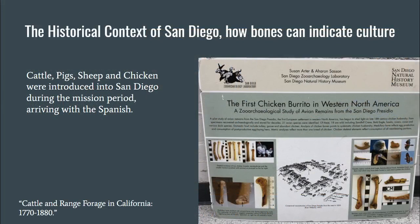In San Diego, the beginning of butchery as we see it in the historical period begins with the arrival of the Spanish in 1769. When the first missions were established, they brought with them cattle, sheep, and chicken to promote self-sufficiency among the missions. With the introduction of these animals to San Diego, the cuisine was radically changed, and ranching became a huge business in San Diego for almost 100 years. Here on the right, we see a study conducted by Aaron Sasson and Susan Arter on the use of chickens at the San Diego Presidio, which was the first European settlement in North America. This study concluded that chickens were not just used as food, but were important safety nets for the women who lived and worked at the Presidio, trading and selling their eggs and chickens as capital.